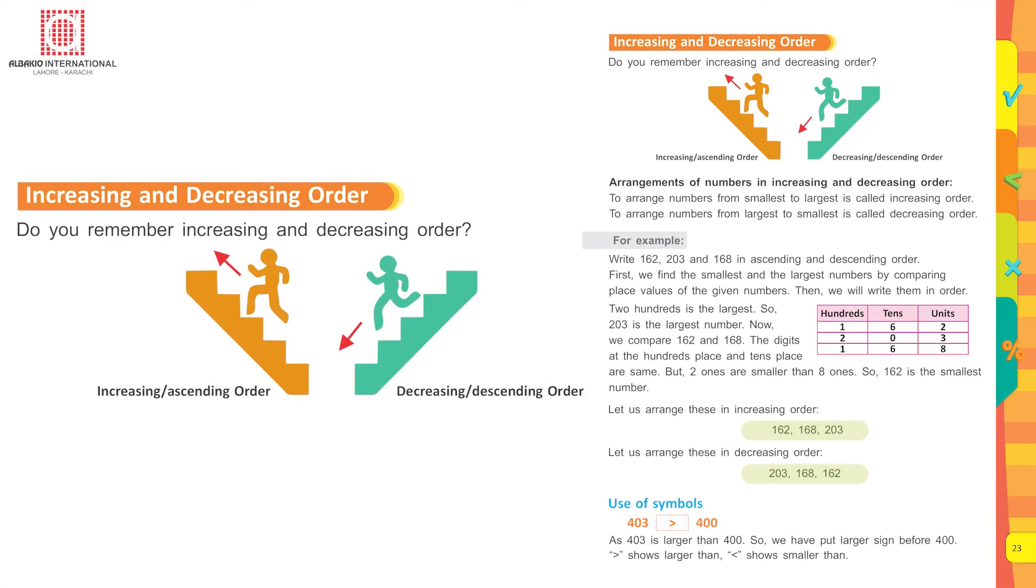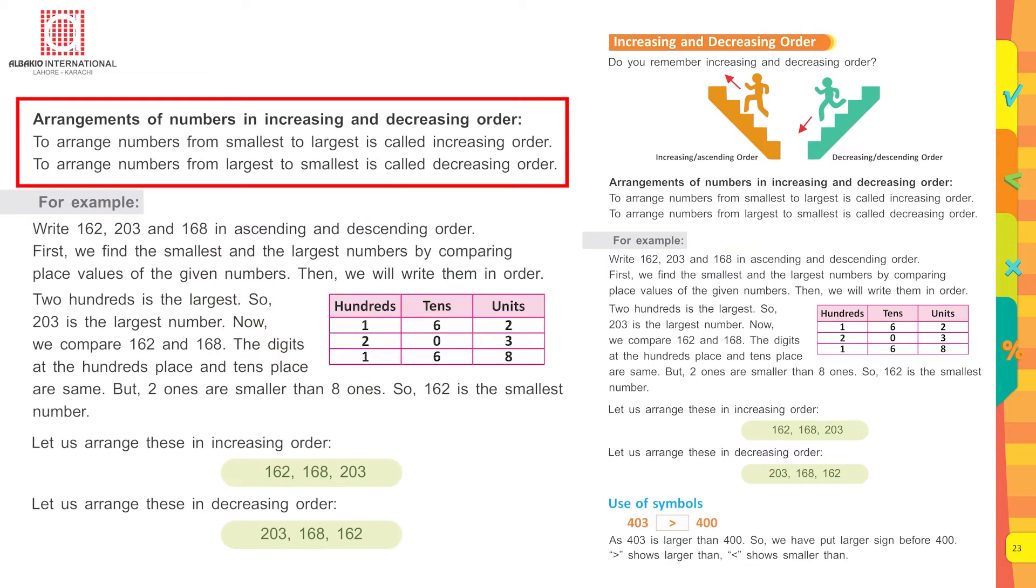Increasing and decreasing order. Do you remember increasing and decreasing order? To arrange numbers from smallest to largest is called increasing order. To arrange numbers from largest to smallest is called decreasing order.